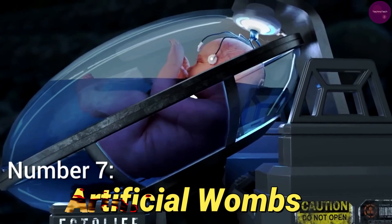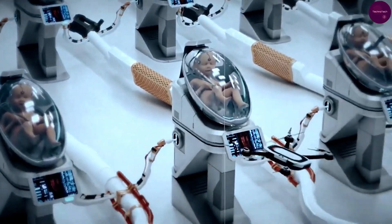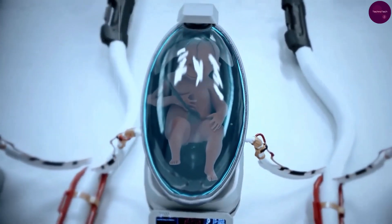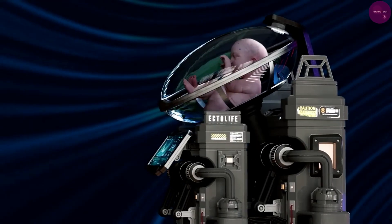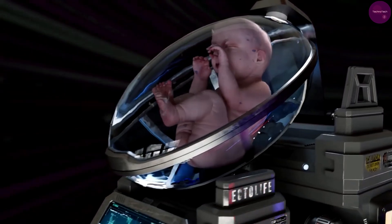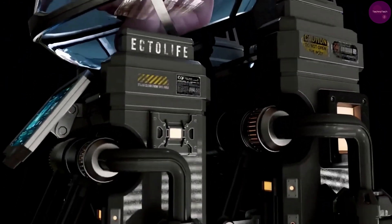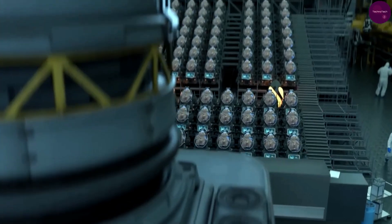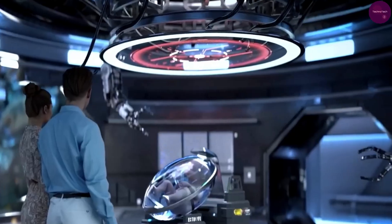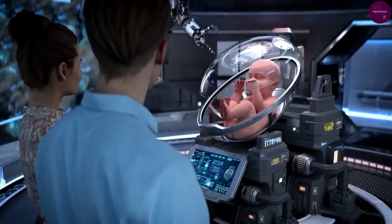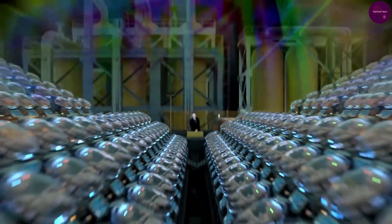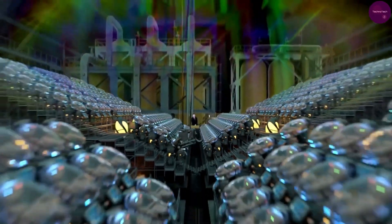Number 7: Artificial wombs. Coming in at number 7 are artificial wombs, a groundbreaking development in reproductive technology. While still in its early stages, artificial wombs have the potential to revolutionize neonatal care and fertility treatments. Beyond providing a lifeline for premature babies, they could offer hope to individuals struggling with infertility, as well as pave the way for human reproduction in space environments.